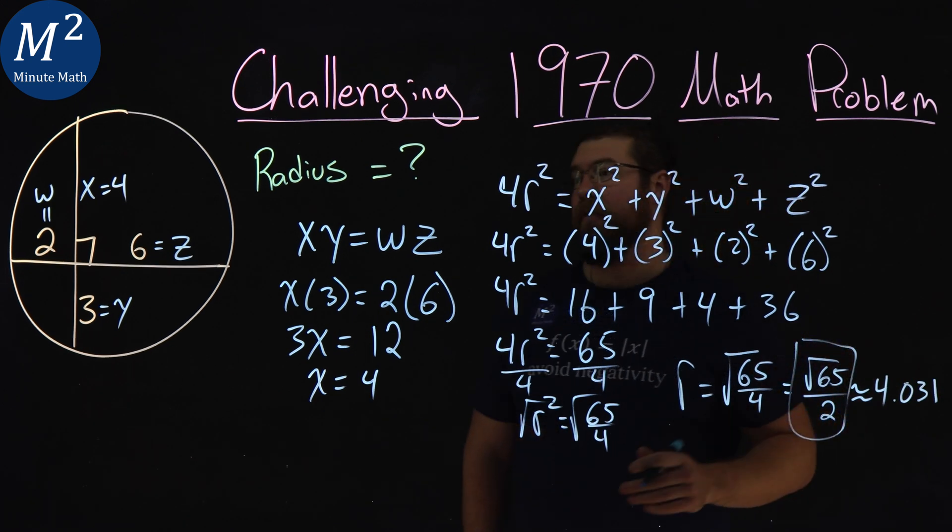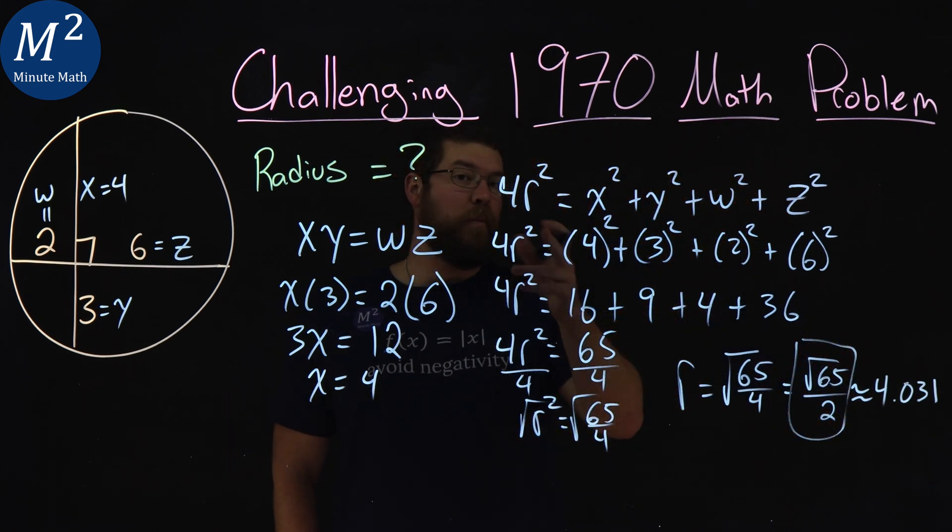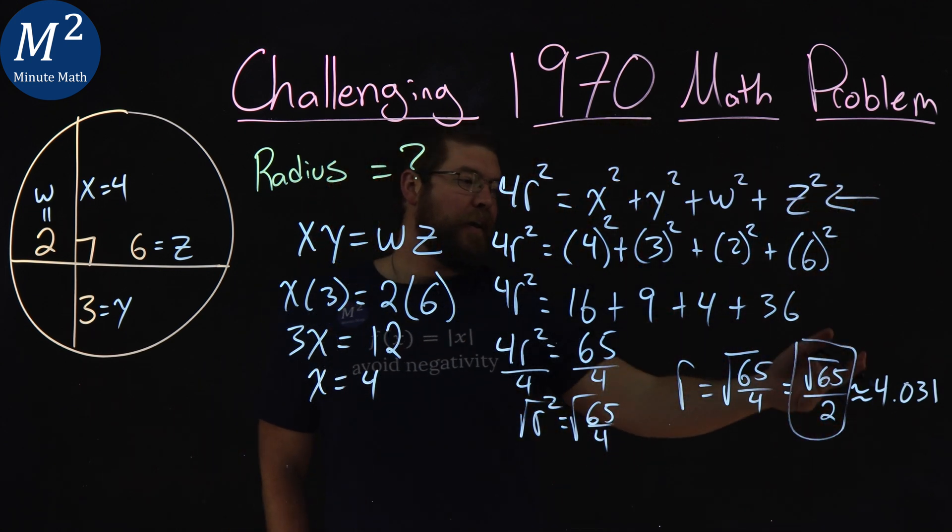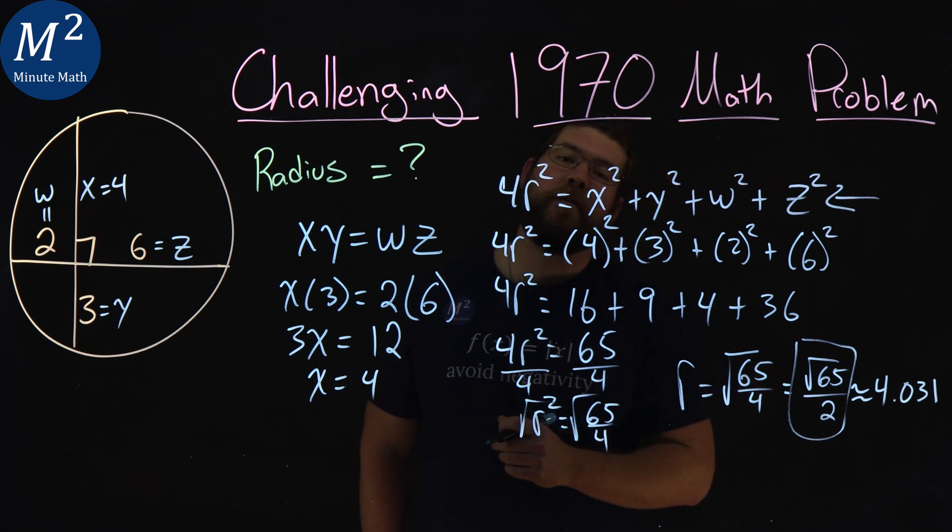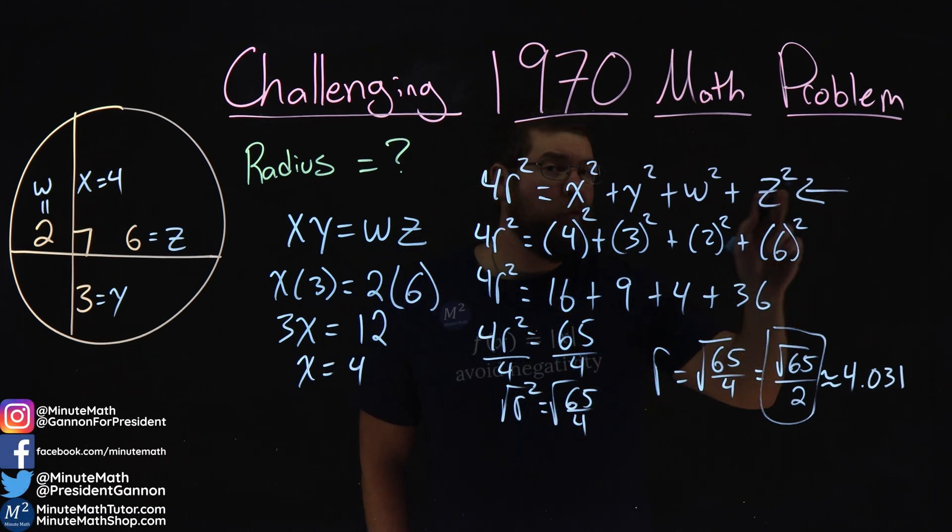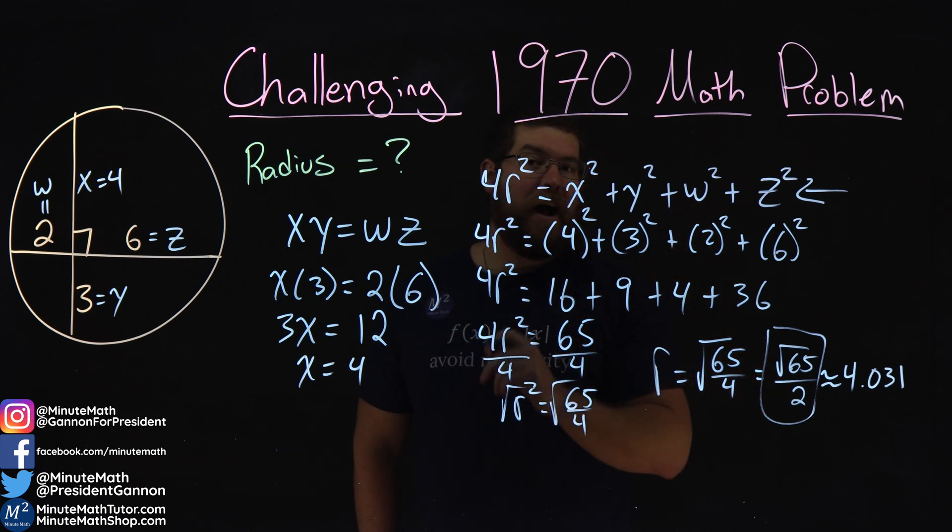So there we have it. The answer to this problem, pretty simple once we know this key formula here, is the radius here is square root of 65 over 2. Now make sure you check our next video where we prove this equation and how we get that.